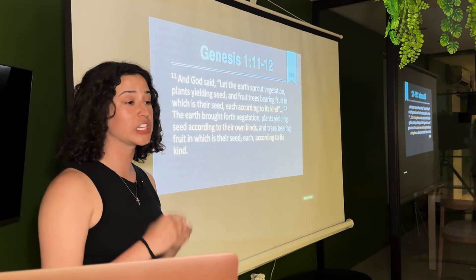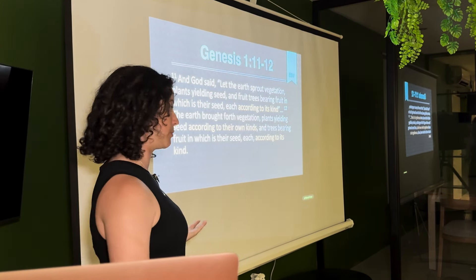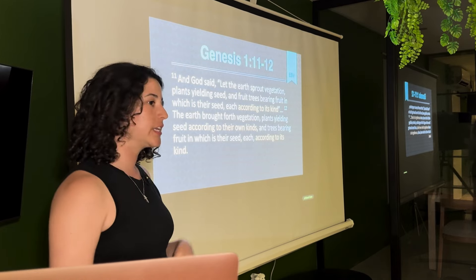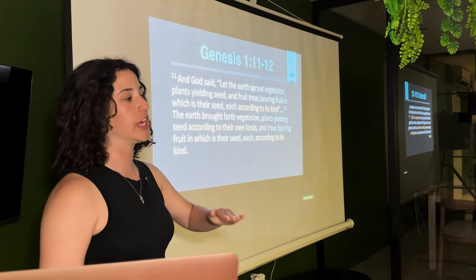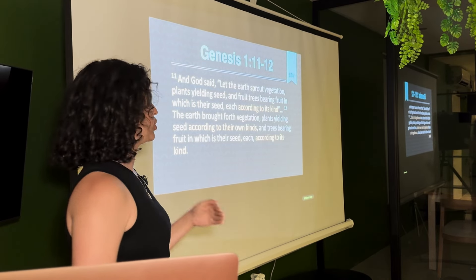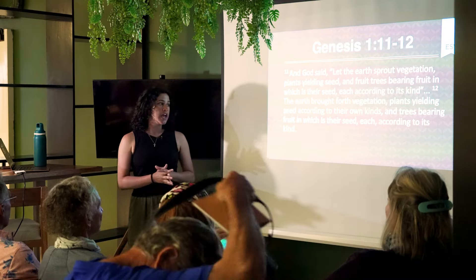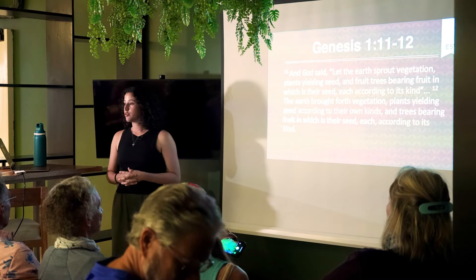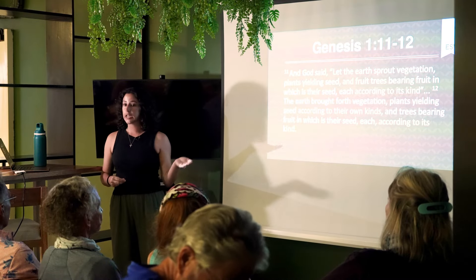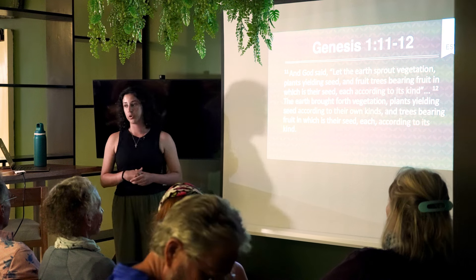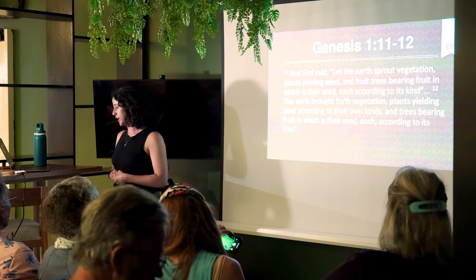This is the classification level from Linnaean taxonomy, which is kingdom, phylum, class, order, family, genus, species. We see these same trends where in the beginning, God created plants according to their own kind.